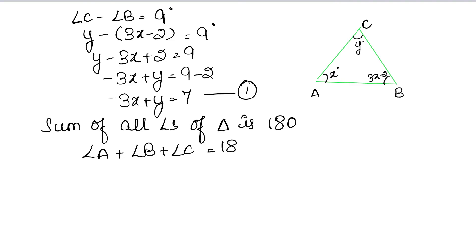So angle A is x, angle B is 3x minus 2, minus 2, plus y equals to 180 degrees. So this gives us 4x plus y, 2 goes to the other side, so 180 plus 2.